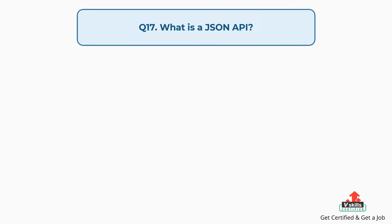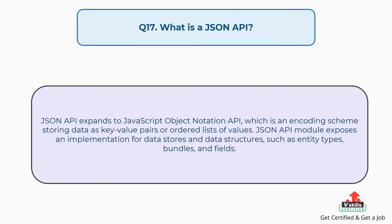Question number seventeen: What is a JSON API? JSON API expands to JavaScript Object Notation API, which is an encoding scheme storing data as key-value pairs or ordered lists of values. The JSON API module exposes an implementation for data stores and data structures, such as entity types, bundles, and fields.